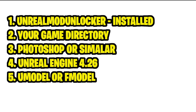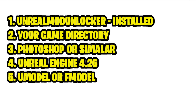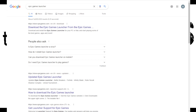Before we start you're going to need some equipment: you're going to need the Unreal Mod Unlocker installed and ready to go, you're going to need to know where your game directory is, you're going to need Photoshop or something very similar, Unreal Engine 4.26, and UModel or FModel. If you don't have Unreal Mod Unlocker installed and you don't know where your game directory is, don't panic — just jump down in the description and have a look at my how-to-install mods on Saints and Sinners video. Photoshop or similar should be simple to get, and Unreal Engine is free — just go on Google and type in Epic Games Launcher.